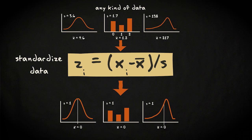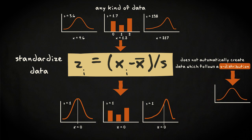However, the Z-transformation does not automatically create data which follows a Z-distribution, and allow you to make probability statements about your data. You will have Z-distributed data only when you know or can assume that the random variable which generates your data is normally distributed, and you can estimate the mean and standard deviation for that normal variable well.